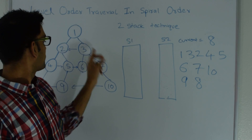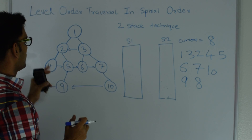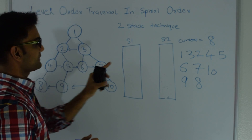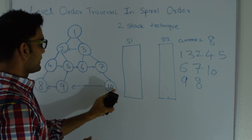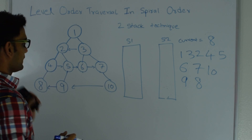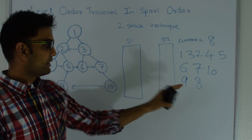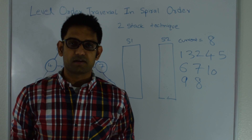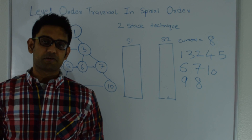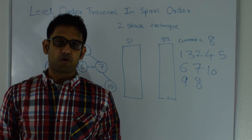So the output is: 1, 3, 2, 4, 5, 6, 7, 10, 9, and 8. This is my level order traversal in spiral order.